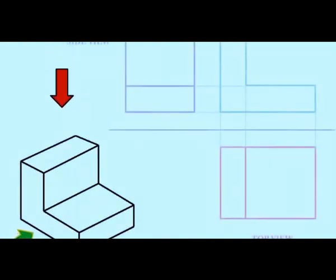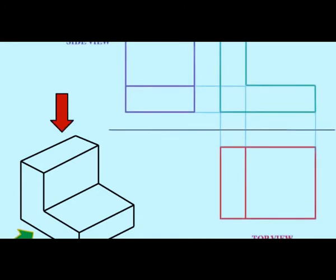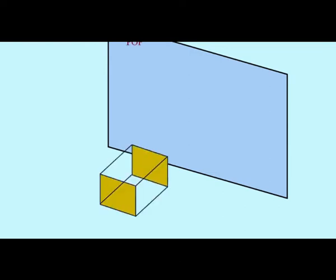Orthographic projection is a common method of representing three-dimensional objects, usually by three two-dimensional drawings in each of which the object is viewed along parallel lines that are perpendicular to the plane of the drawing. For example, an orthographic projection of a house typically consists of a top view or plan, a front view, and one side view, called front and side elevations.